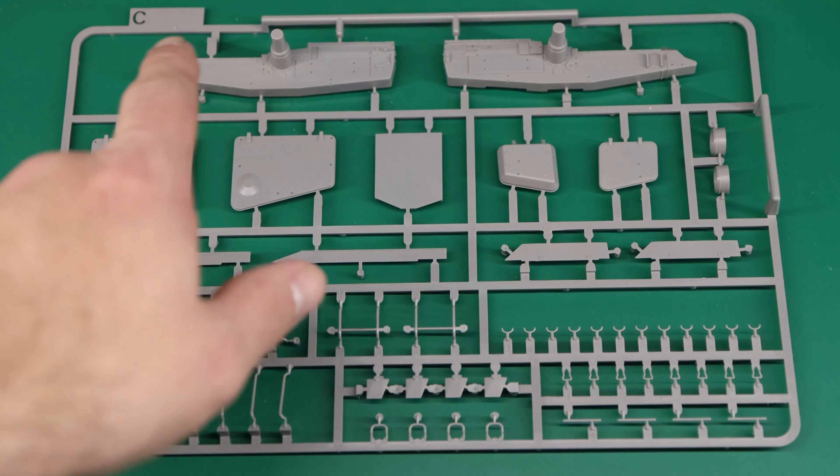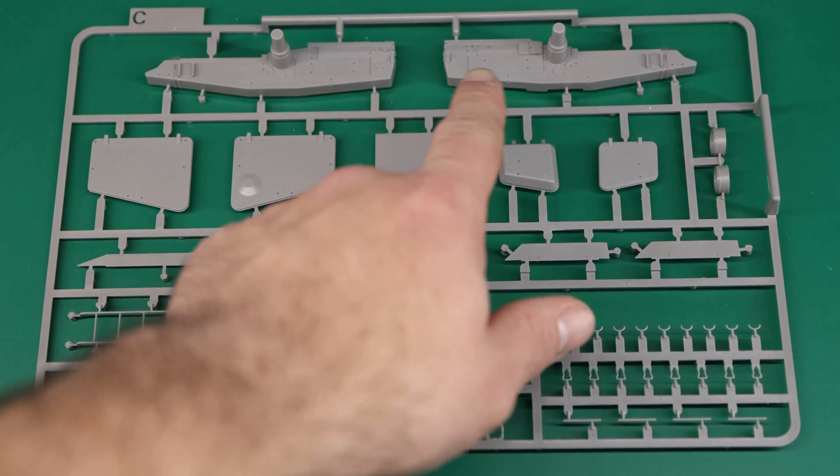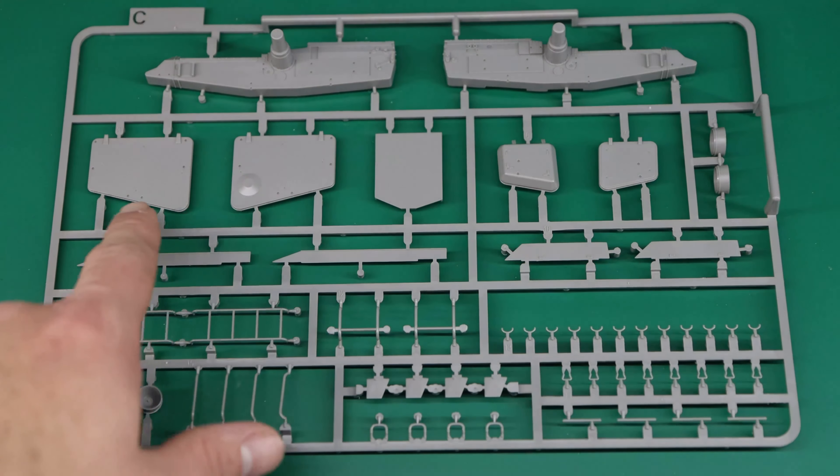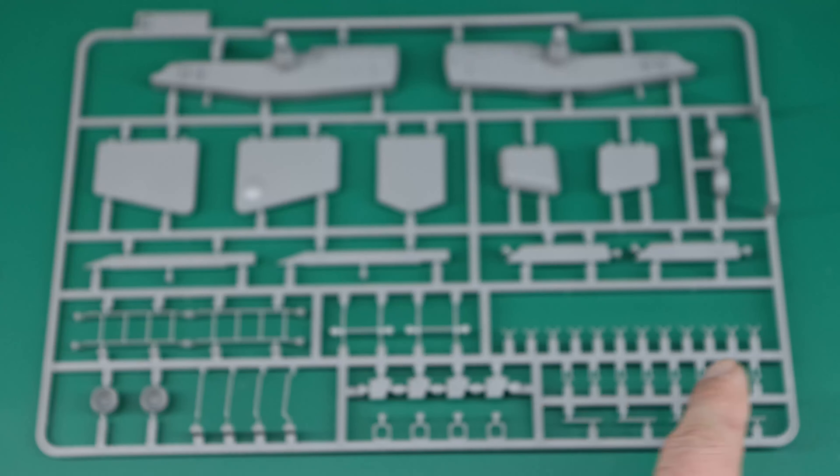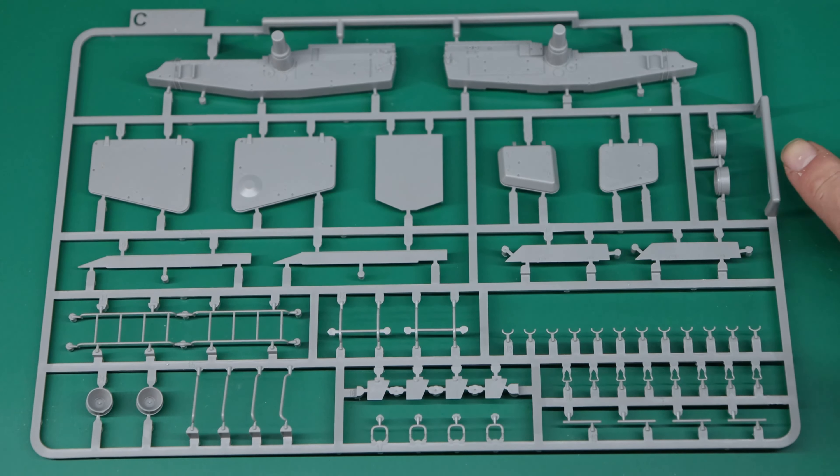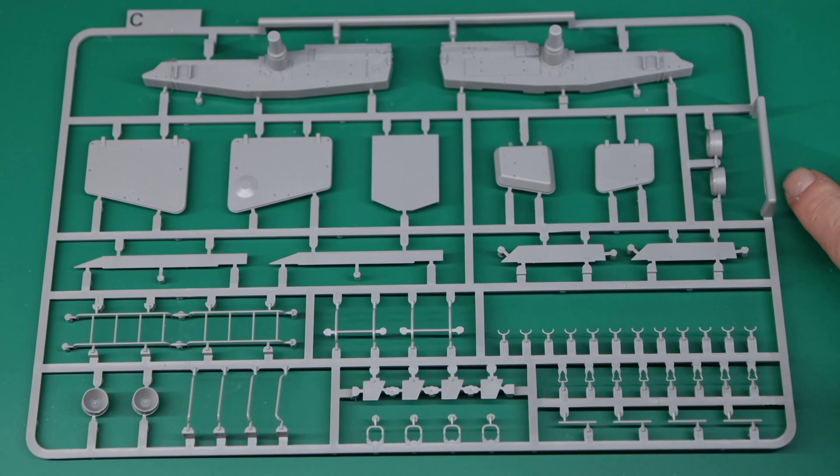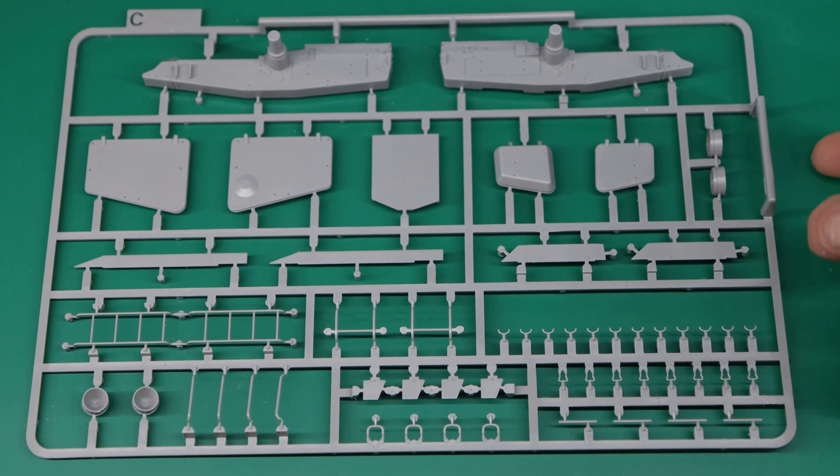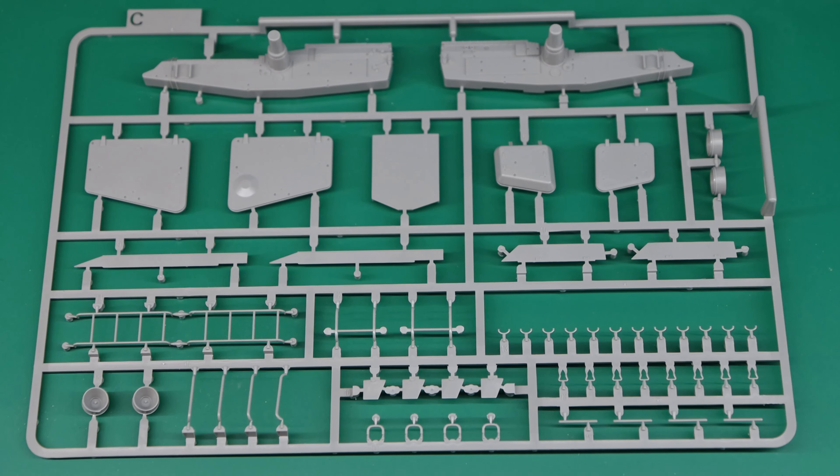The next sprue we have is sprue C. As we can see there's the two halves of the actual missile holder as well as more of the hatches and stuff that go around. Over here on the right hand side you can see slide molded nozzles for the rear ends of those missiles.